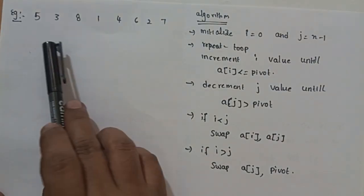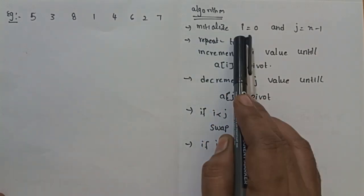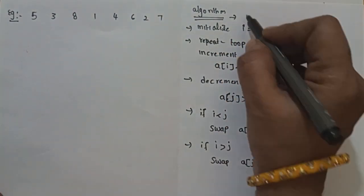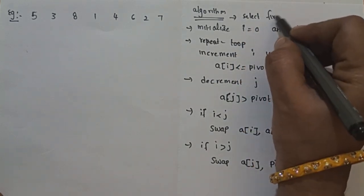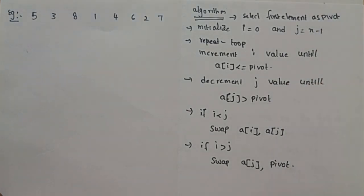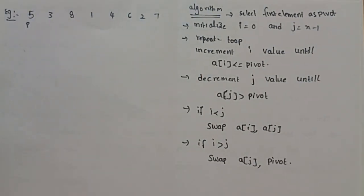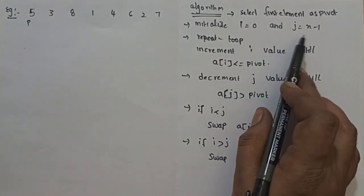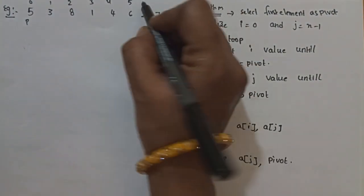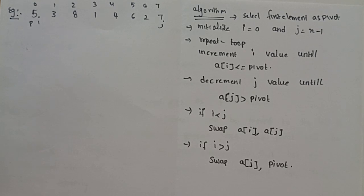So this is the given array — elements one, two, three, four, five, six, seven, and eight elements total. Initialize i to 0 and j to n-1. The array index starts from 0 and the last index is n-1. So pi 6 is index 7, meaning i is initialized to 0 and j is initialized to n-1, i.e., the last element.